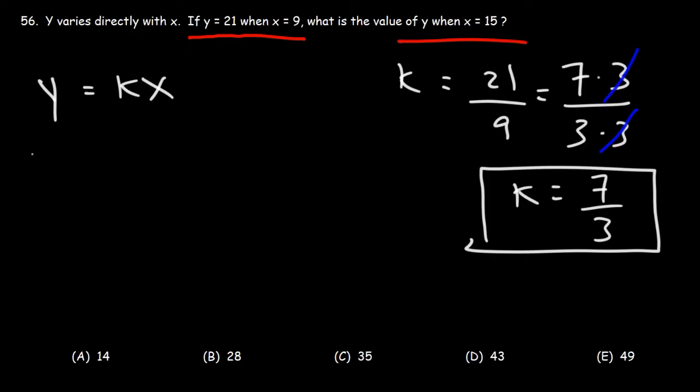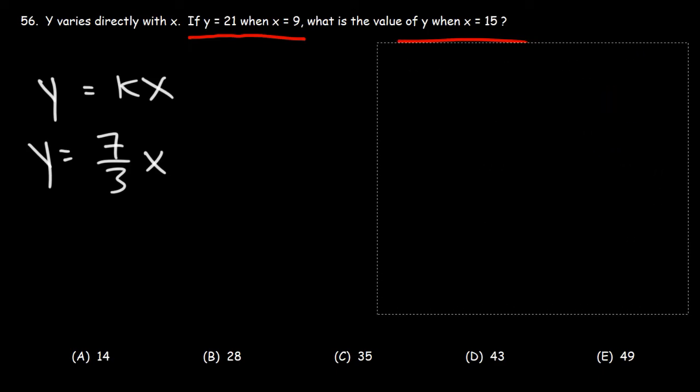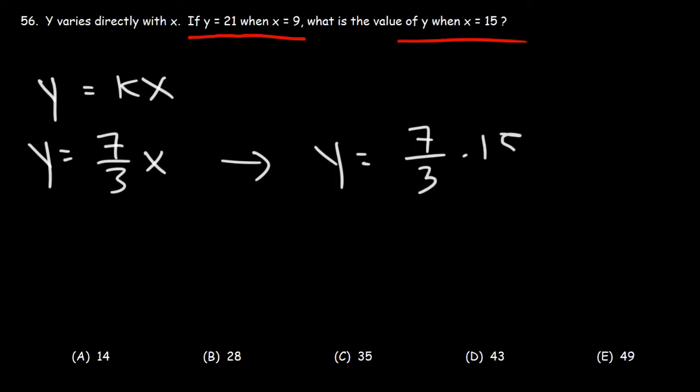So thus we have the formula y is equal to 7 over 3 times x. So now we can answer the second part of the problem. What is the value of y when x is 15? So y is going to be 7 over 3 times 15.